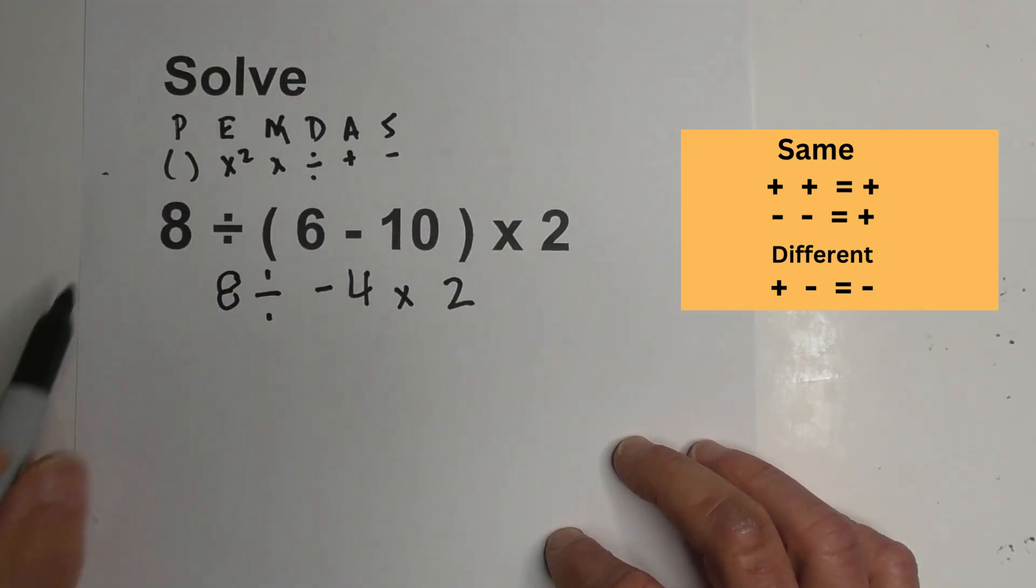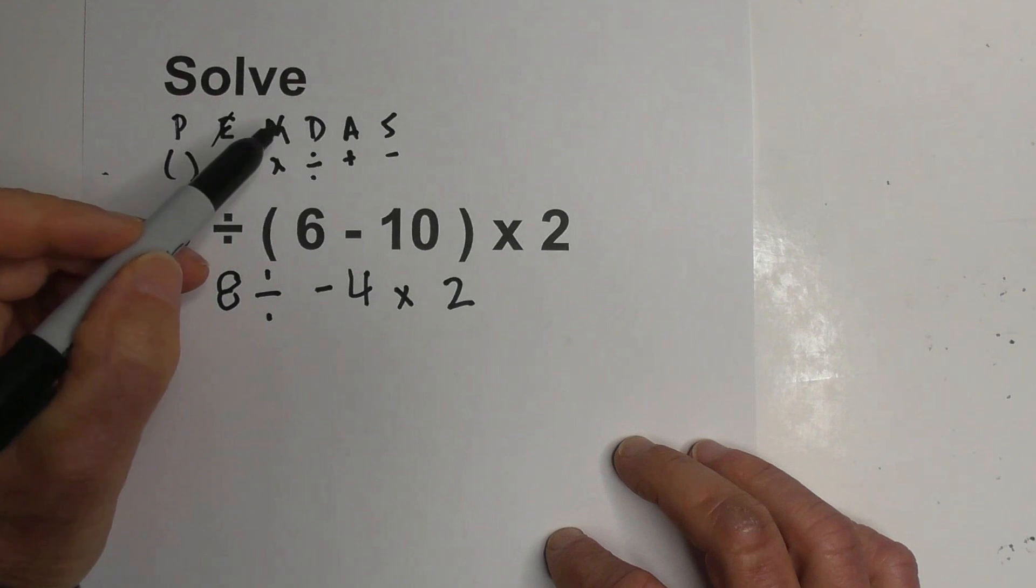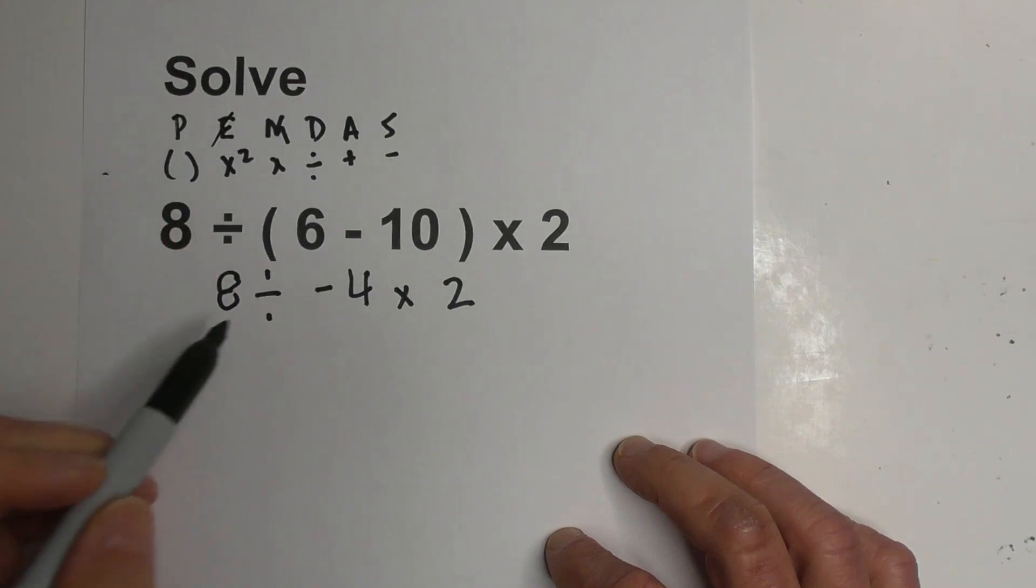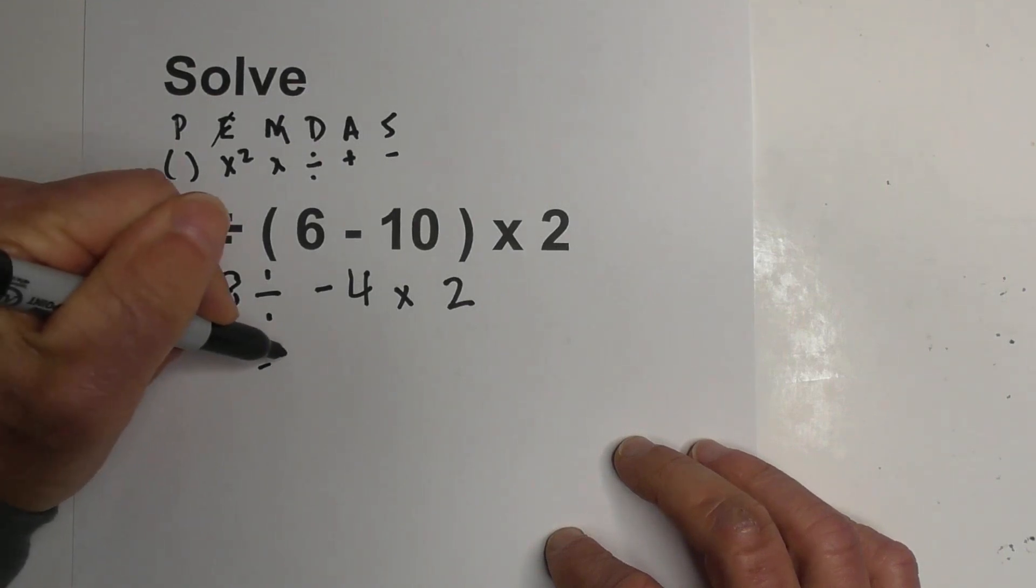So now do we have exponents? No. So we need to move to multiplication and division. And remember, it's whatever appears first. So we have division first. So we're going to go 8 divided by negative 4. And that gives you a negative 2.